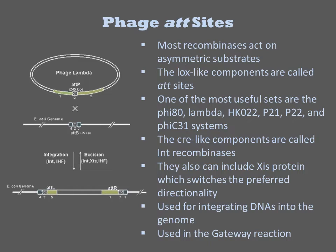Another popular sequence-specific recombinase type are the phage att sites. Most of these recombinases act on asymmetric substrates and thus the reaction has directionality. In the most popular system, from lambda phage, a DNA with the attP sequence is recombined with a DNA, such as the genome, with an attB sequence. The resulting sequences are named attL and attR, and these are different sequences than attP and attB. Thus the reaction is not symmetric, and can be driven in one direction or the other.